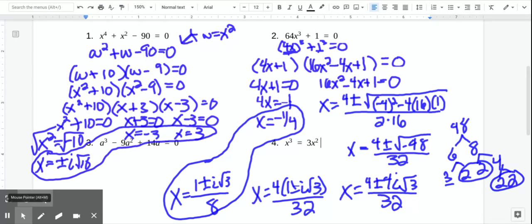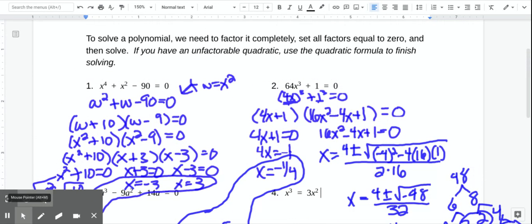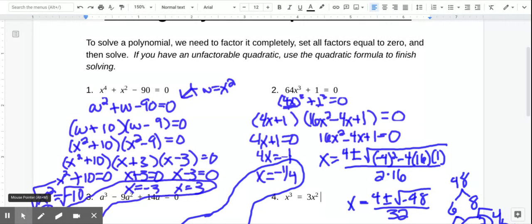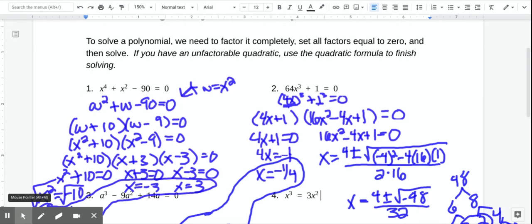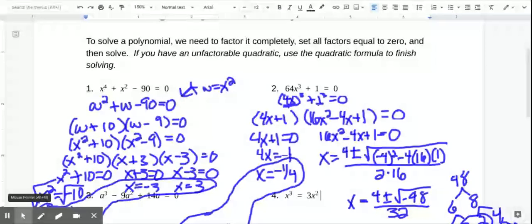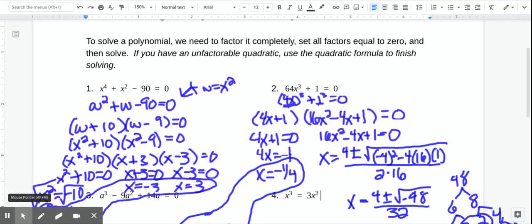And if you notice up at the top of the notes, it actually tells you how to do this. So to solve, we factor it completely, set all the factors equal to 0, and then solve. That's what we've been doing. If we end up with a quadratic that we can't factor, we use the quadratic formula to finish. We'll check out the last problem in the next video.